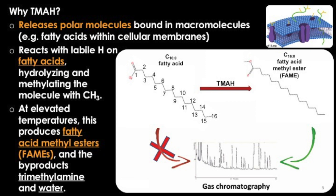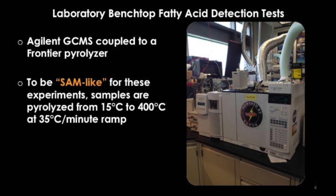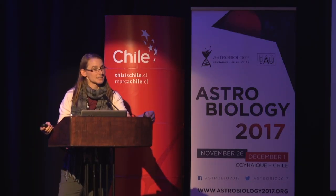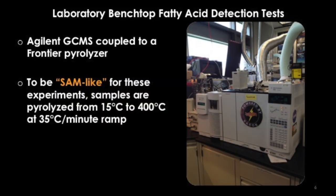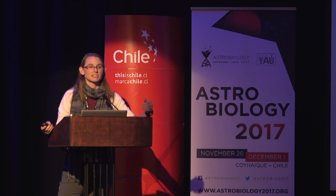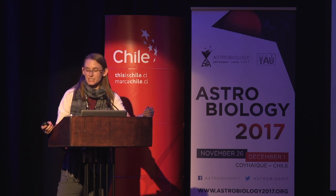This is the instrument setup I've been using for benchtop laboratory experiments — an Agilent GCMS coupled to a Frontier Pyrolyzer. We've done two suites of analyses: one optimizing the experiment to best detect fatty acids in these samples, and one trying to make these experiments more SAM instrument-like. In that case, we pyrolyze the sample from about 15°C to 400°C at a 35°C per minute ramp — the maximum the SAM instrument can achieve — to know if that affects the types of fatty acids we detect.